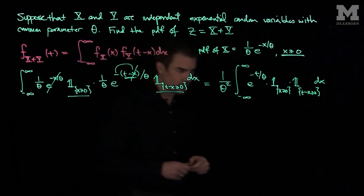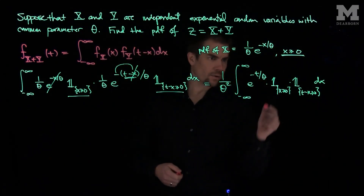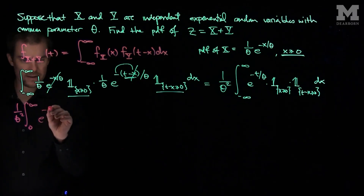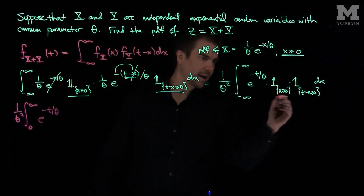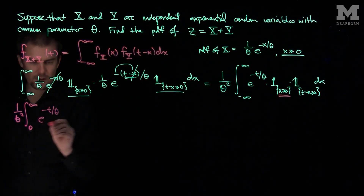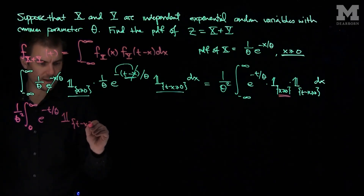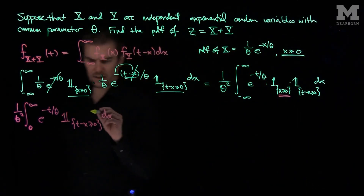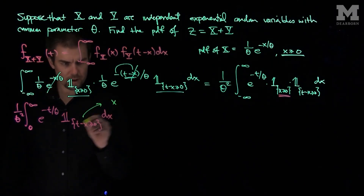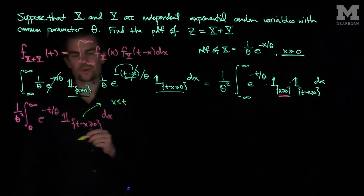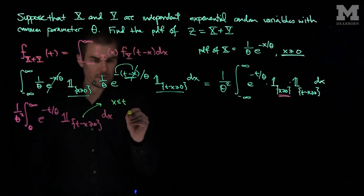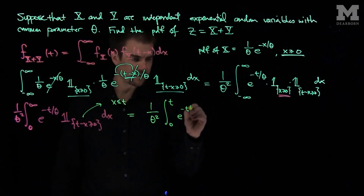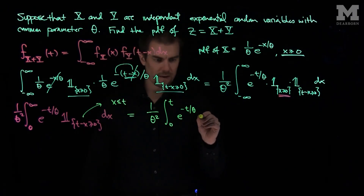Now let's analyze what those two conditions tell us. The first condition tells us that x goes from 0 to infinity, so we replace the lower limit with 0. The second condition, t minus x ≥ 0, tells us that x ≤ t. So our integral becomes (1/θ²) times the integral from 0 up to t of e^(−t/θ) dx.